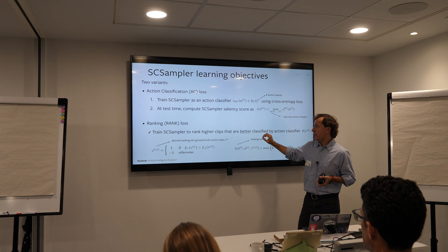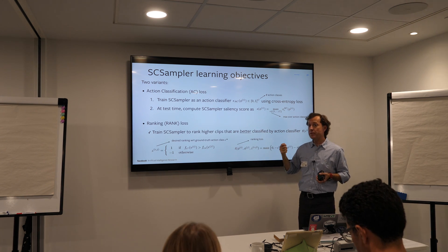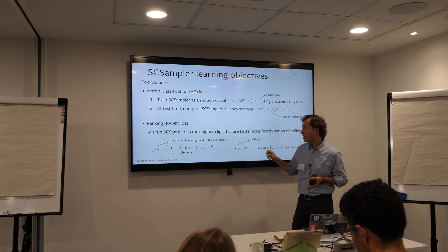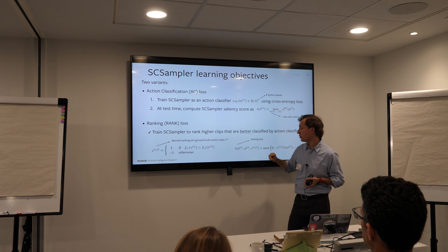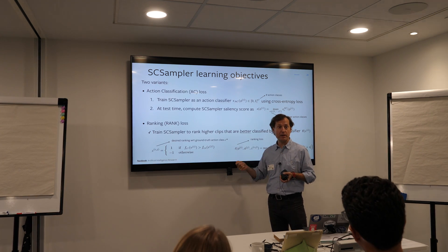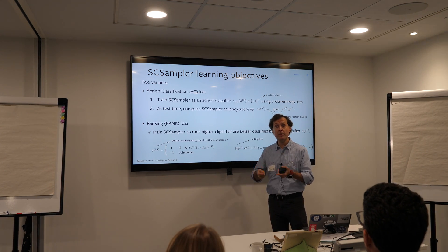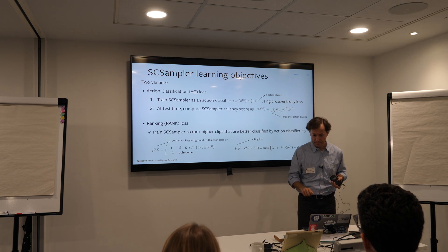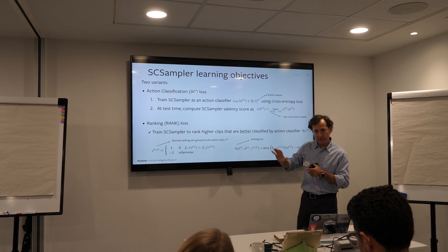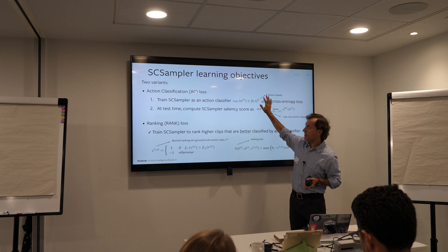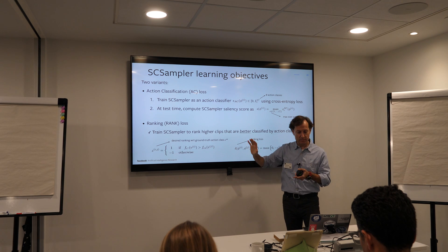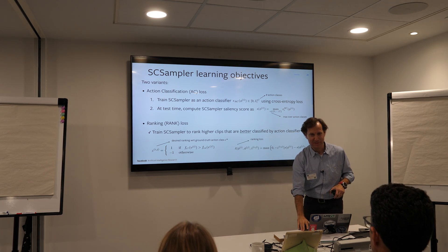To address this, we developed a ranking loss that optimizes SAMPLER for the specific clip classifier to be used at inference time. The idea is to generate pseudo-ground truth labels by ranking clips according to the score produced by the clip classifier on the training set with respect to the ground truth label. We found that both approaches work similarly: the visual SAMPLER works best under the action classification loss, while the audio SAMPLER works better under the ranking loss — and we believe we know why.